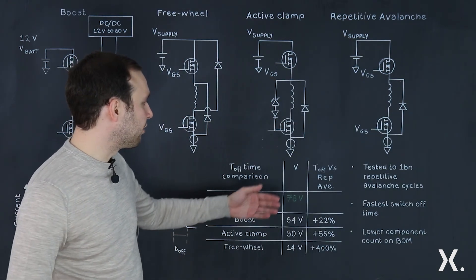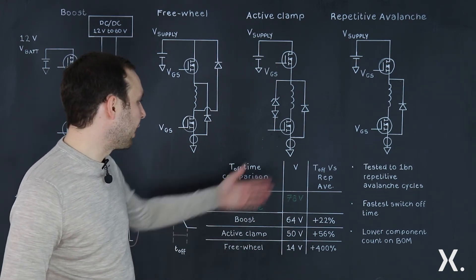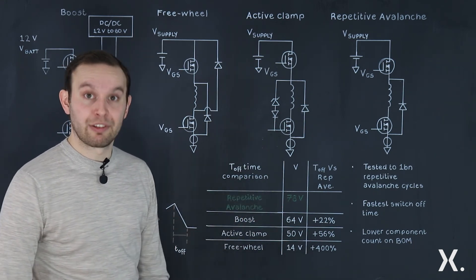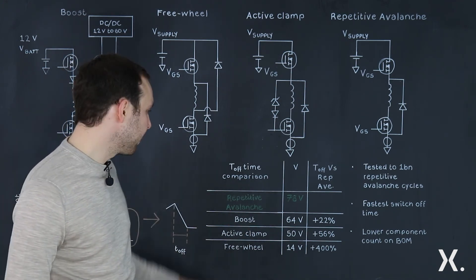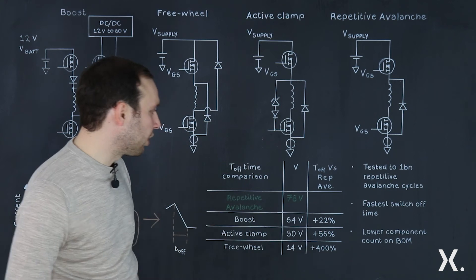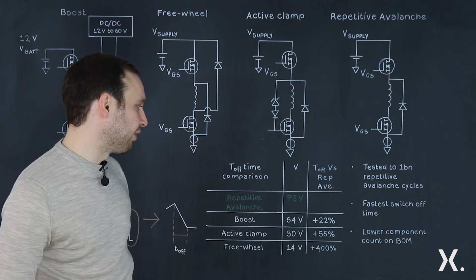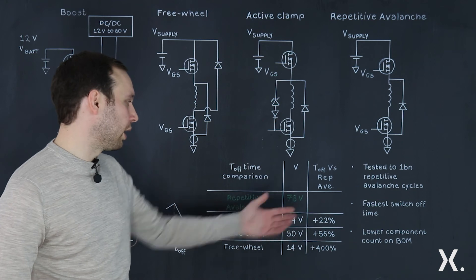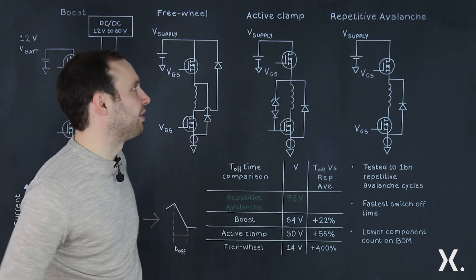The key difference is the voltage across the inductor at turn-off. The energy decay is denoted by the voltage: the higher the voltage, the quicker the energy will be dissipated. Avalanche has the fastest switch-off time and fastest energy decay, followed by the boost circuit, the active clamp, and the freewheel. The boost circuit is 20% slower; the active clamp is over 50% slower; and the freewheel diode is significantly higher than the other designs due to the nature of its components.